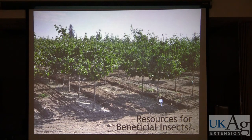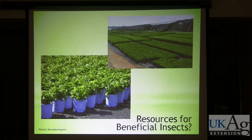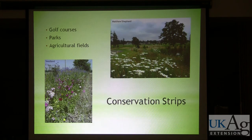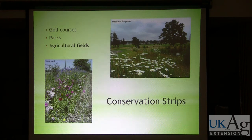Looking at the nursery setting, the question is what type of resources are available for natural enemies. In many cases, there really aren't a lot of resources available, and sometimes in these monoculture settings the natural enemies have no additional resources available to them. There is the idea of using conservation strips. There's actually an organic vegetable farm in Crestwood, Kentucky that has planted a conservation strip of flowering plants — 400 feet long, 10 feet wide — next to their vegetable production fields, with the purpose of promoting beneficial insects.